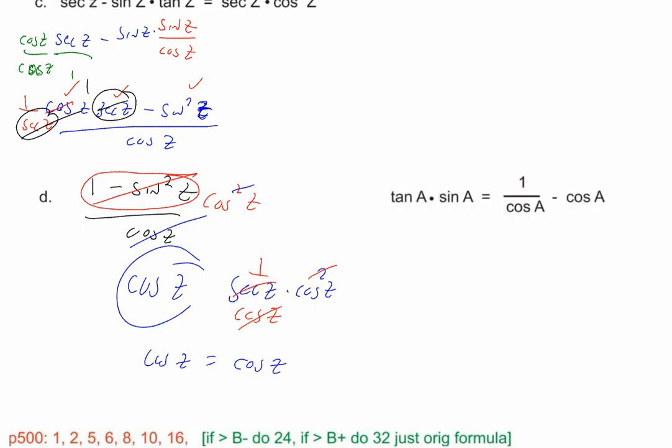We're not going to get to the last one, but I'd tell you what I would do: this is a common thing — two terms on one side, one on the other. I would get a common denominator, add the numerators, and put them over the common denominator. That's a pretty common approach when you have more than one term on a side.